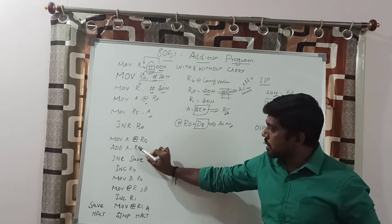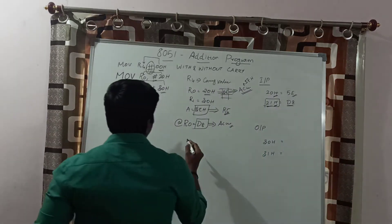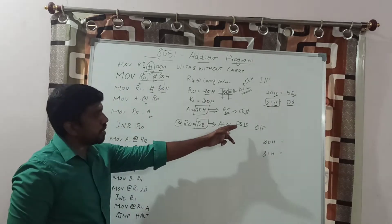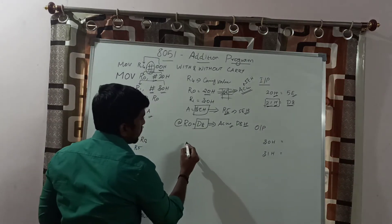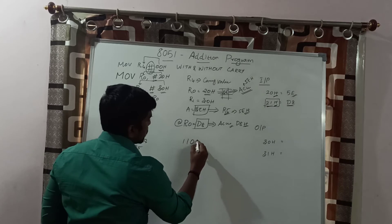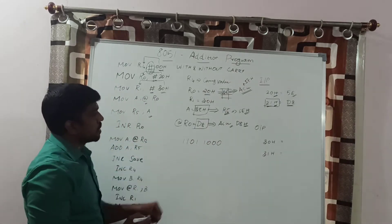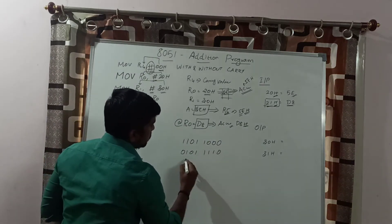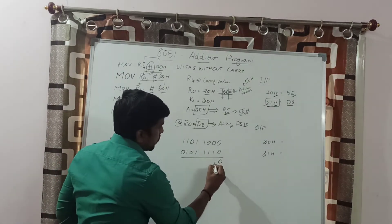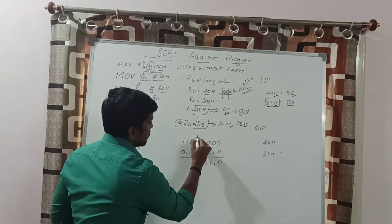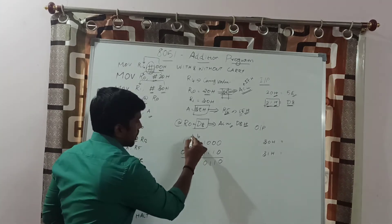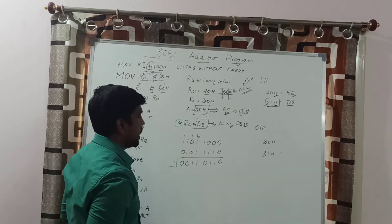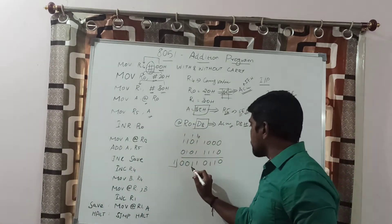The next instruction is ADD A, R5. Now you have two data values: R5 contains 5EH and accumulator contains D8H. Converting to binary: D8H — D represents 13, which is 1101, and 8 is 1000, giving 1101 1000. For 5EH — 5 is 0101 and E is 1110, giving 0101 1110. Adding the two binary numbers bit by bit with carry propagation, the result sum is 36H and the carry value is 1.